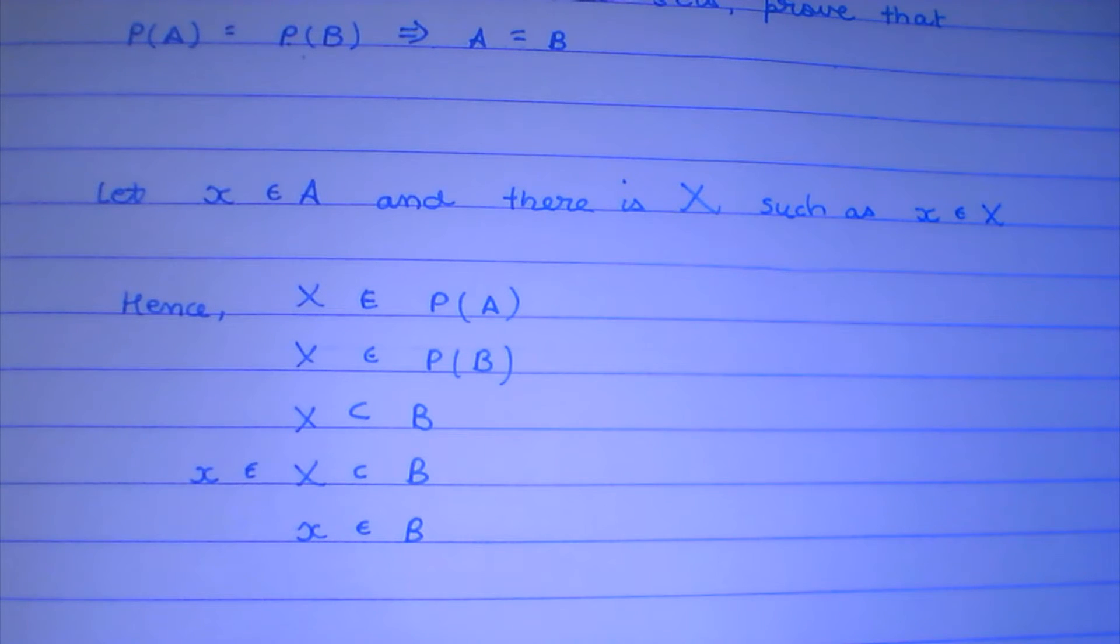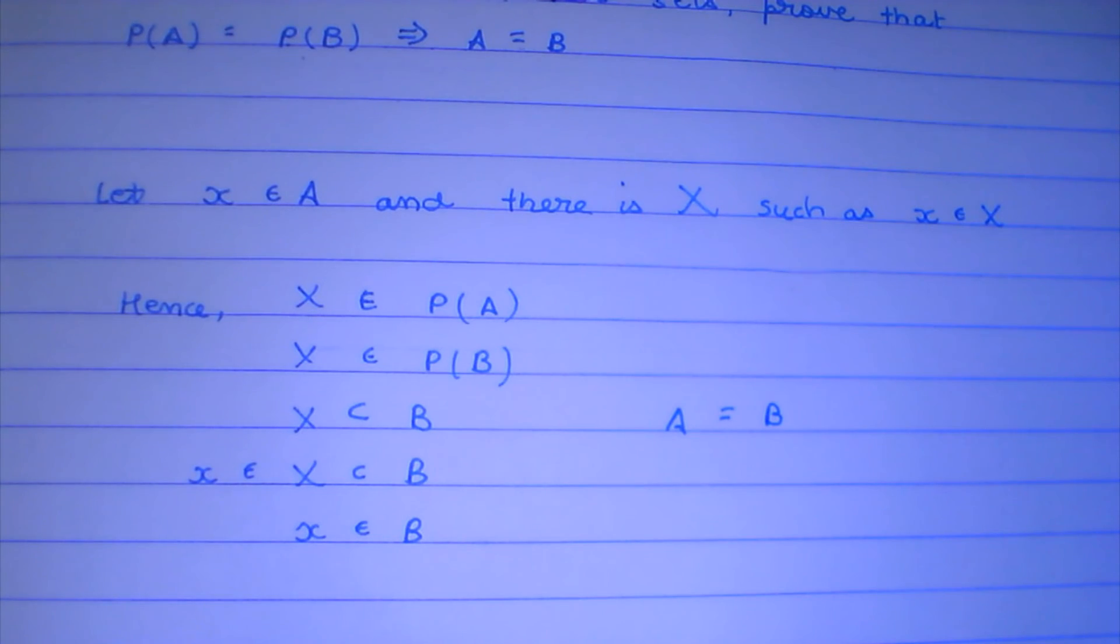And now, if x belongs to A and x also belongs to B, this means that A is equal to B. And we are done.